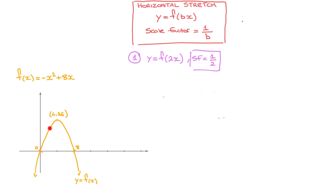Of course, we can't multiply every single x-coordinate because there's an infinite number of them. Instead, we focus on key points on the curve whose coordinates are known. For instance, the x-intercept at 8 — coordinates 8, 0 — will turn into the point whose x-coordinate is 8 times 1 half. Since 8 times 1 half is 4, that x-intercept will end up at 4. Similarly, the vertex with coordinates 4, 16 will turn into the point whose x-coordinate is 4 times 1 half, which is 2 — so the point 2, 16.